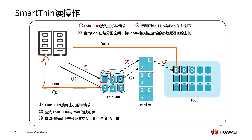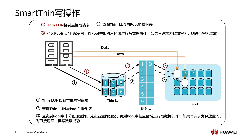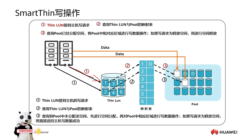Next is the SmartThin write operation. The host sends a write IO request to our ThinLun. ThinLun receives the request and queries the mapping table between ThinLun and the pool storage area to confirm whether the pool storage area has already allocated actual storage space to our ThinLun. If existing pairs are found in the mapping table — meaning actual physical space has been allocated inside this logical storage area — then we will focus on that actual physical area.